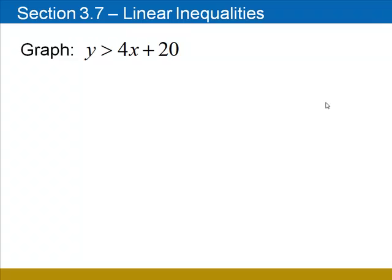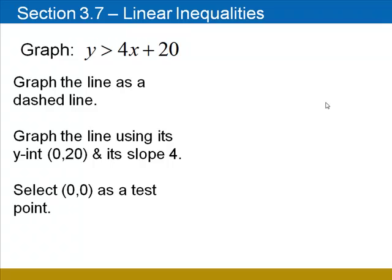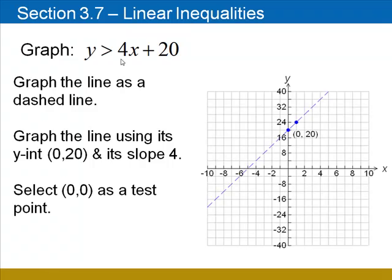Let's try one more. Y is greater than 4x plus 20. This line will be dashed, no equal sign. And we'll graph the line using the slope-intercept form. The y-intercept is at 0, 20, and the slope is 4. So starting at the y-intercept of 20, we move up 4, 1 to the right. Notice that the vertical scale here is in units of 4, and we draw the dashed line that passes through them.